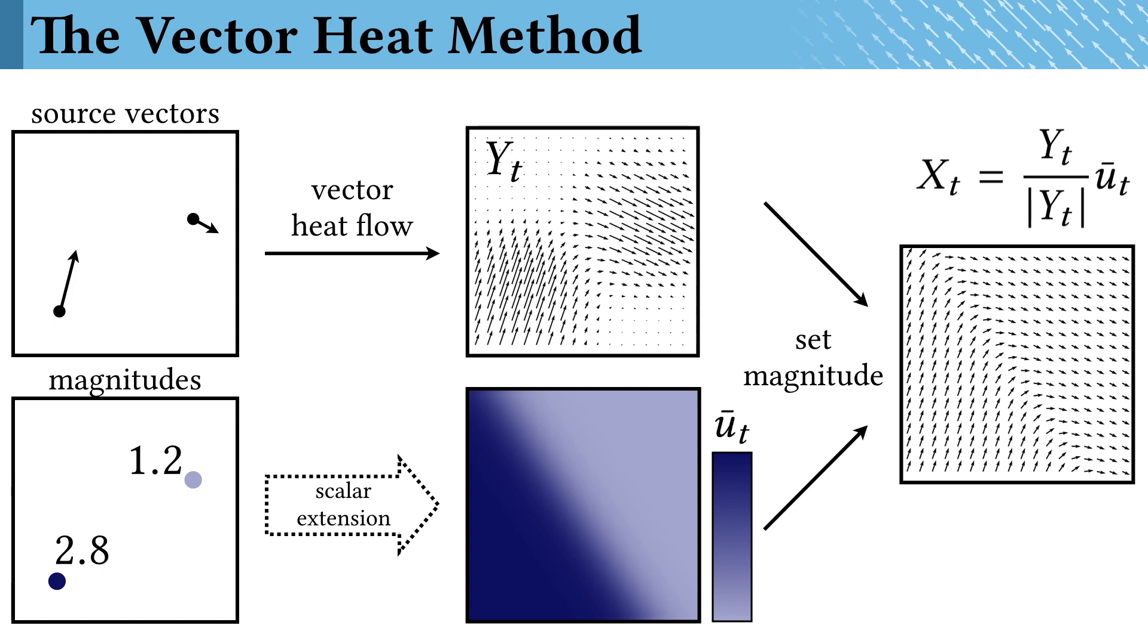Notice that if you're transporting a single vector, you could skip this bottom step and just normalize. But in general, the bottom step really is necessary to get the magnitudes right.